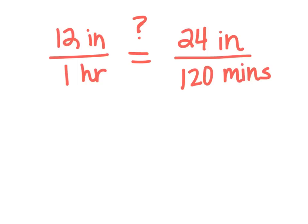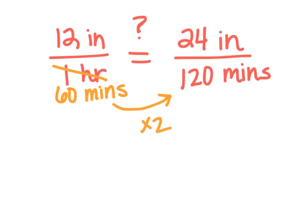Looking at the next example, I have two rates and I want to know, are these equivalent? I notice they both are talking about inches — that's good. But this one has hours and this one has minutes, so I have to change one of these. It doesn't matter which one. I'm going to change an hour to 60 minutes — I didn't really change it, it's the exact same thing. Now to test: from 60 minutes to 120 minutes, that's double, times 2. So the inches should be double too. 12 times 2 is 24. So these two rates are equivalent — yes, they are equivalent.